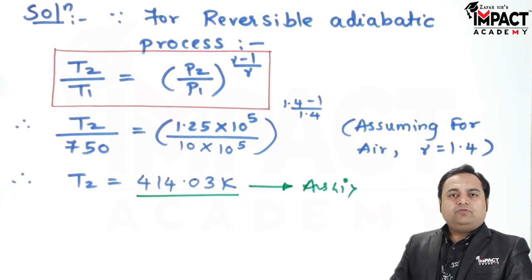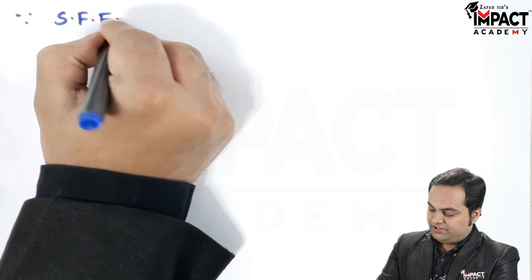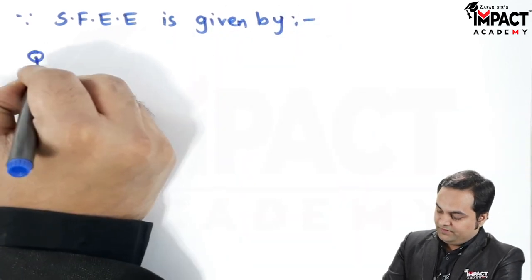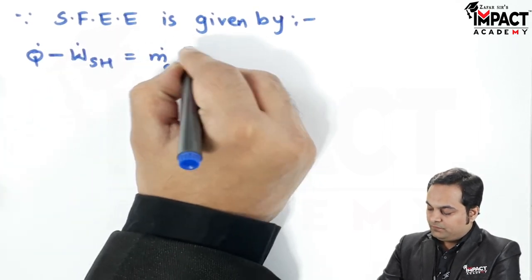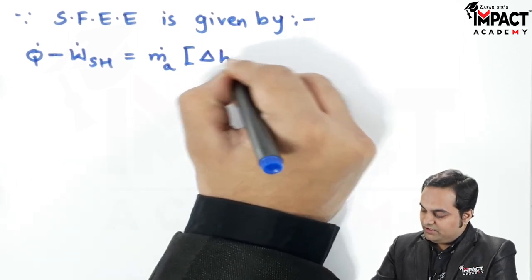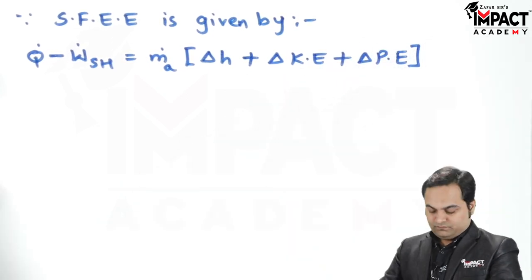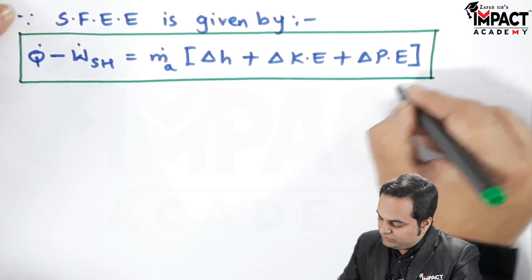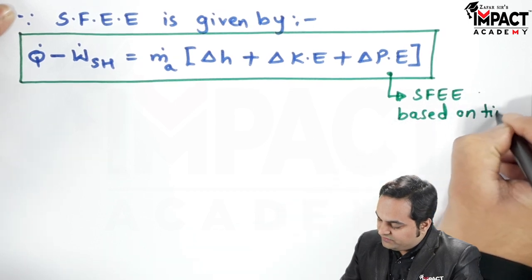Next, to find the shaft work or power output of the turbine, I will use the Steady Flow Energy Equation. The SFEE is given by: Q̇ minus shaft work equals ṁ_a into bracket — change in enthalpy ΔH, plus change in kinetic energy, plus change in potential energy. This is called SFEE based on time.